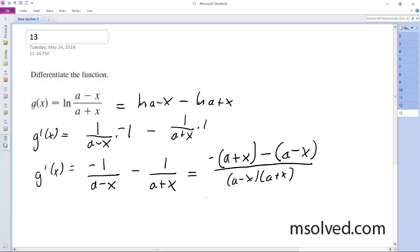And then we get, simplifying this, so this became negative a minus x, minus a plus x, so the x's cancel out, you get negative 2a.